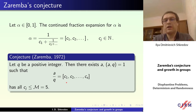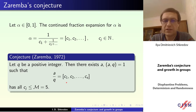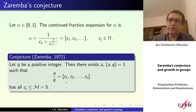One can conjecture that if we throw away a finite number of q, then maybe this constant equals even two. Nevertheless, we are very far from this conjecture, and the best result in this direction is due to Korobov.